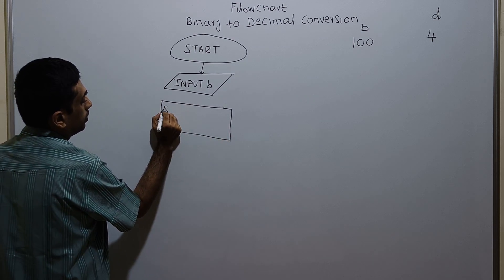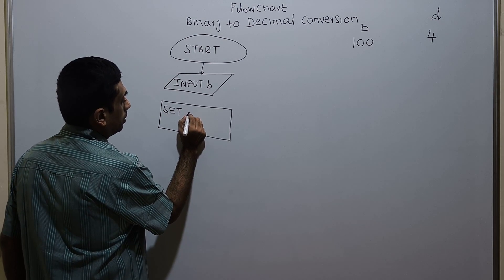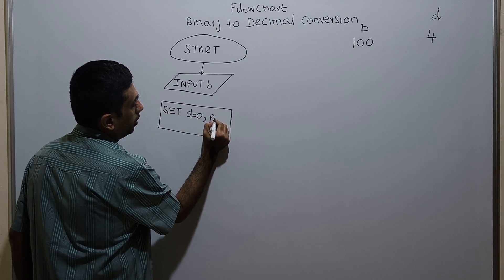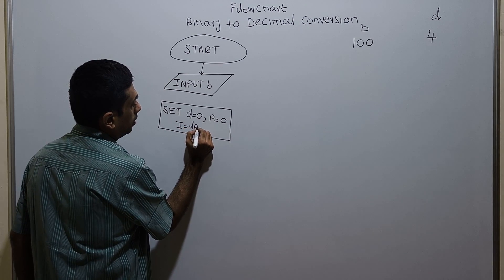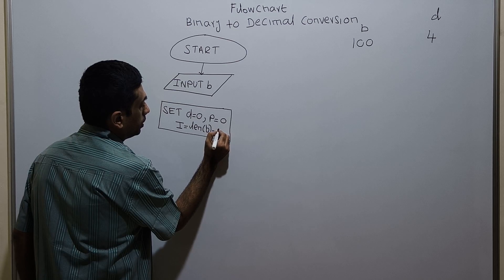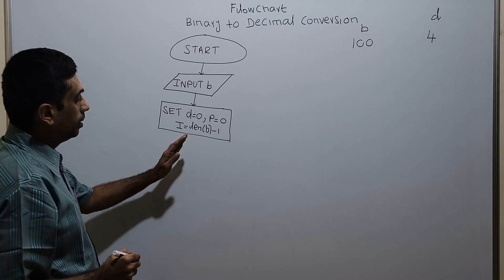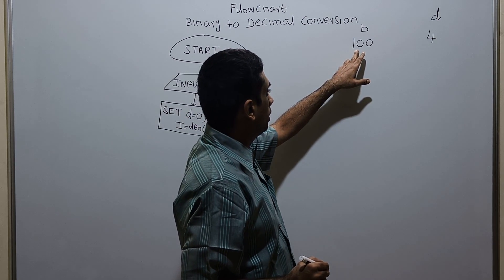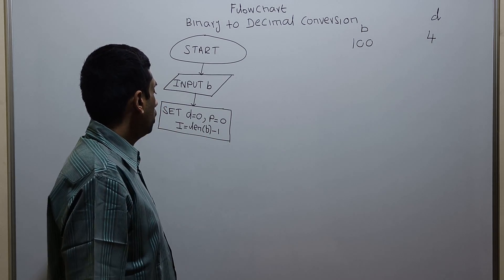Using a set statement, the variable D equal to 0, P equal to 0, and I equal to length of B minus 1. That means the length of the input B minus 1. So if I store a binary number 100, the length of B is 3, and 3 minus 1 equals 2, so the value of I equals 2.